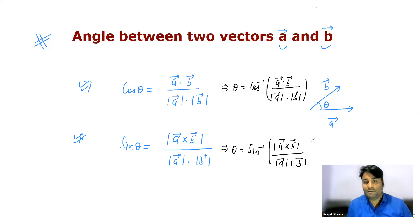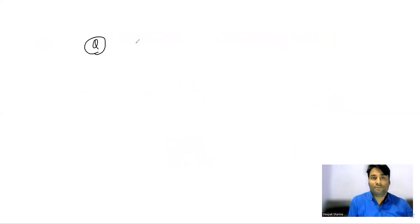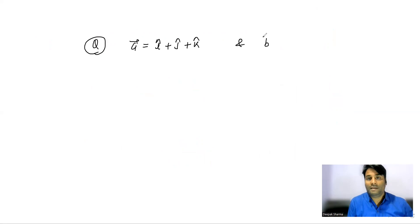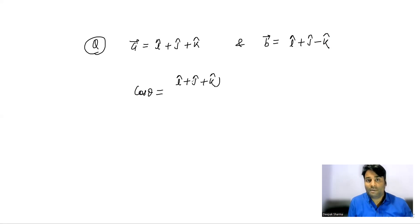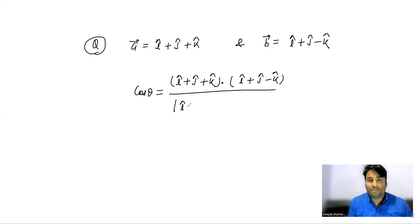Let's have a question to make this more clear. We have vector a equal to i cap plus j cap plus k cap, and vector b equal to i cap plus j cap minus k cap. We have to find the angle between these two vectors. So cos theta equals a dot b: (i cap + j cap + k cap) dot (i cap + j cap - k cap), divided by the magnitude of a times magnitude of b.